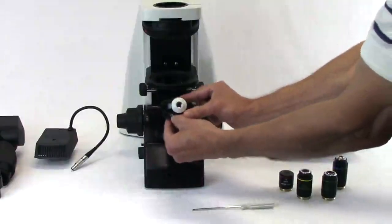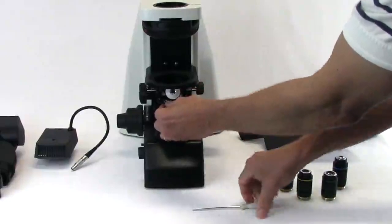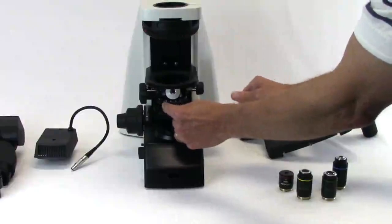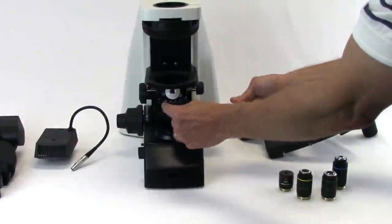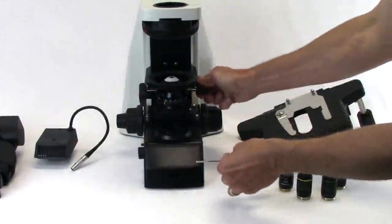Position the condenser with the centering pin facing toward the back of the dovetail slider. Slide the condenser into place and wiggle it to ensure the positioning pin is engaged. Gently re-tighten the lock screw.